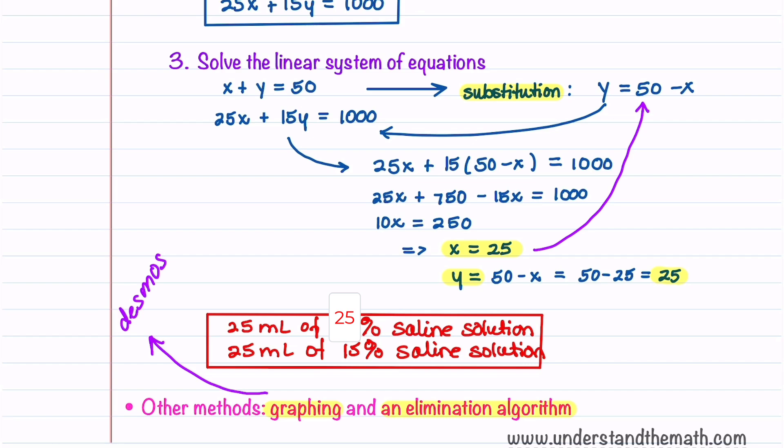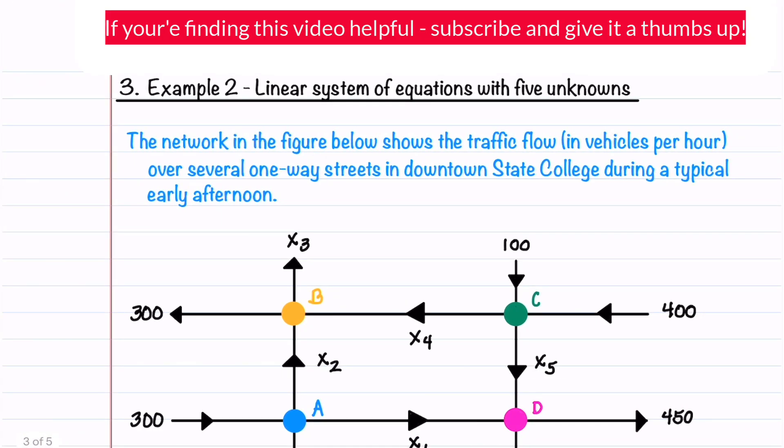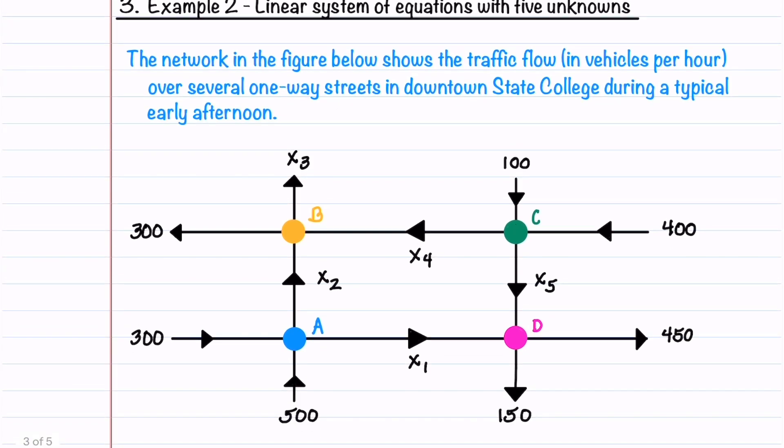Let's now look at an example that has more equations. We have a network involving traffic flow in vehicles per hour over several one-way streets in downtown State College, Pennsylvania, during a typical early afternoon. We have four intersections labeled A, B, C, and D.